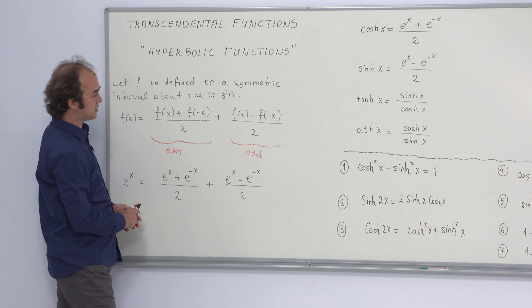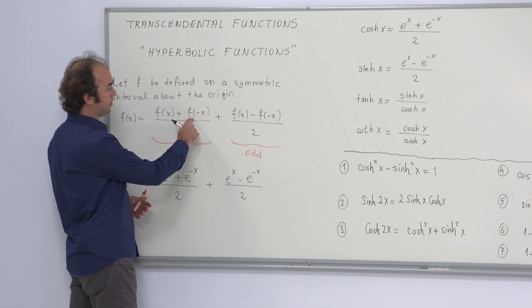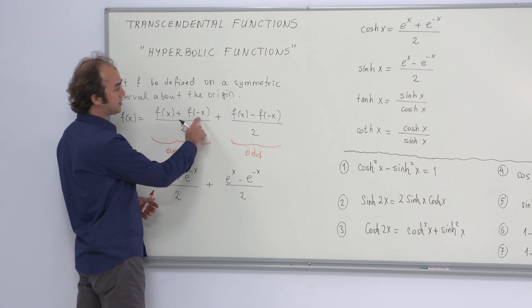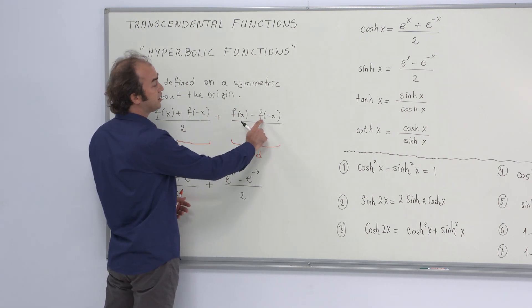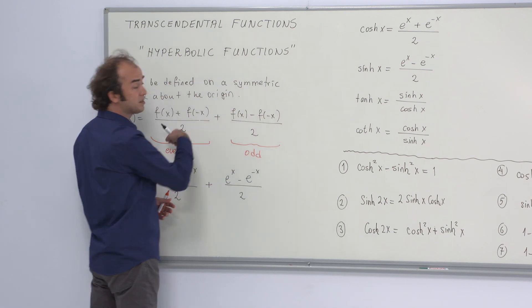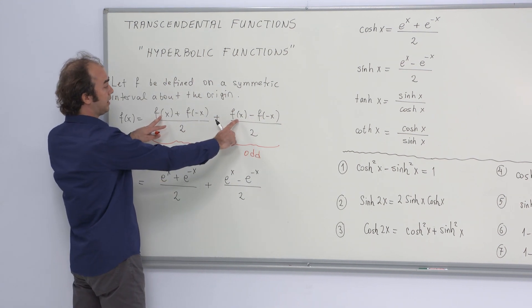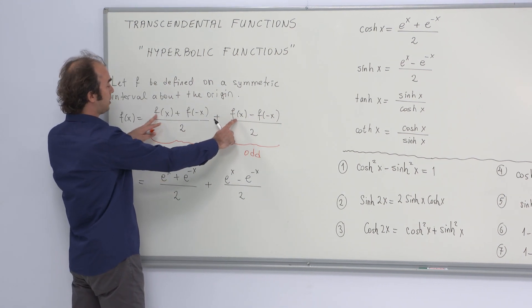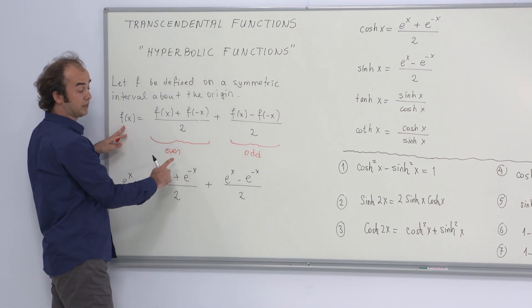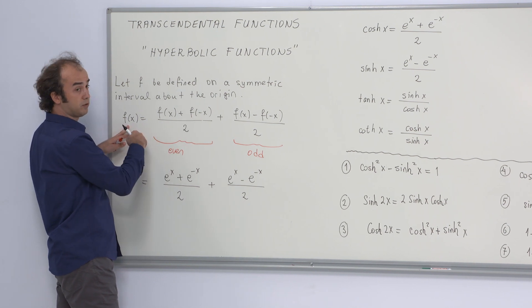You see that in this sum, from the left side the term f of minus x, and from the right side the term f of minus x — they are cancelling each other, and by these two terms you are obtaining f of x. So it is true that this sum is equal to f of x.